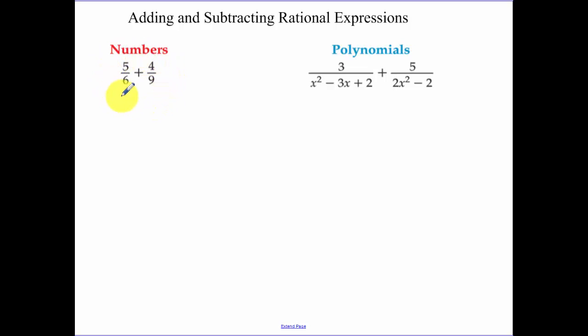So if I want to add these two fractions, I need to have a common denominator. In order to have a common denominator, I need to multiply the 9 by a 2 over 2, and a 6 by a 3 over 3, because the denominators had to have all of the factors of 6 and 9. So I would get 15 over 18 plus 8 over 18, and when I add them together, you just add the numerators and the denominator stays the same.